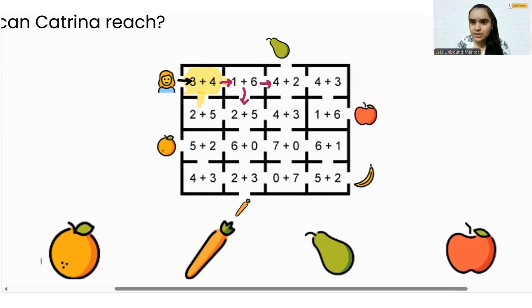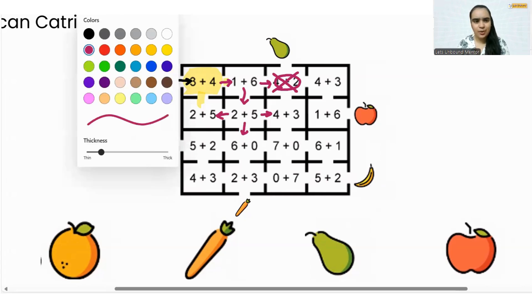Now after this room, we can go down or we can go on the right side, but 4 plus 2 is not 7, right? It is 6. So we will not go into this room. We will go down. 2 plus 5 is 7. Now we can go here, we can go here, or we can go even here as well. So where should we go?